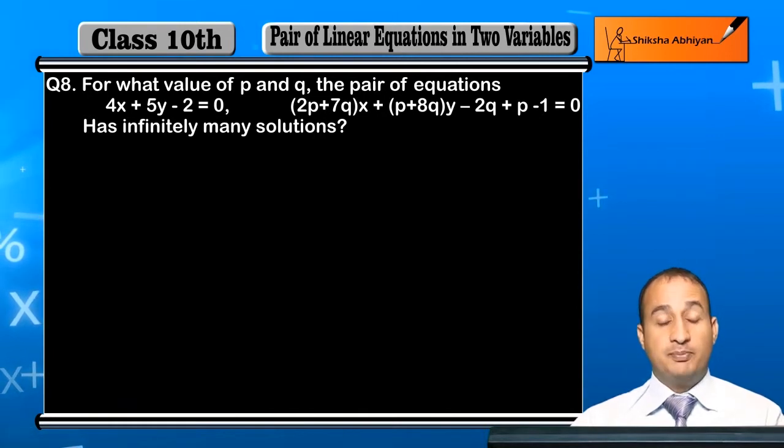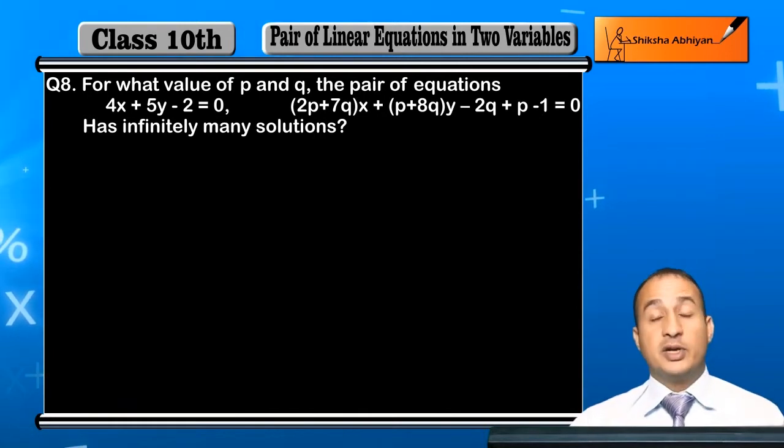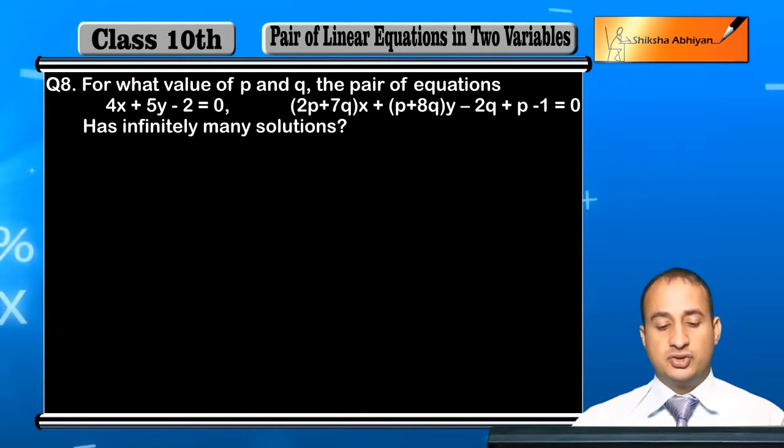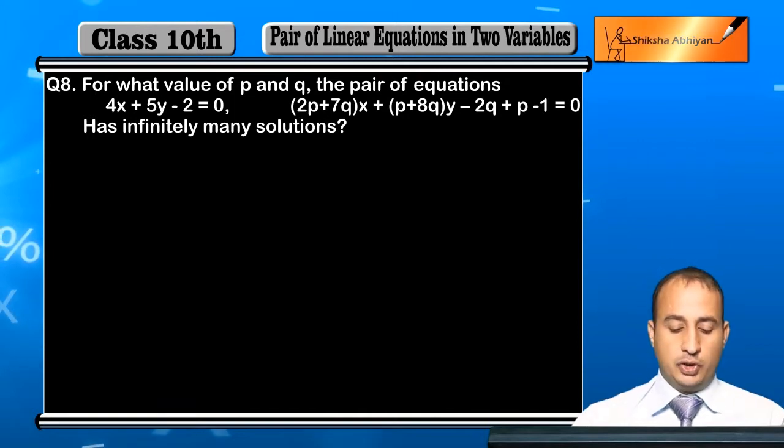What is it? You have to find p and q. When do you have to find them? When this equation has infinitely many solutions. When it is infinitely many solutions, then you have to find the p and q value.